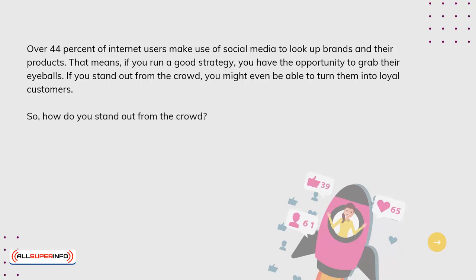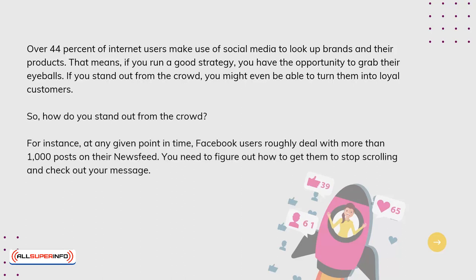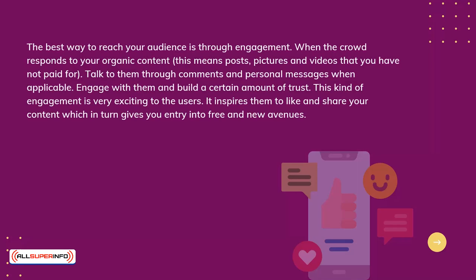So how do you stand out from the crowd? At any given point in time, Facebook users roughly deal with more than 1,000 posts on their news feed. You need to figure out how to get them to stop scrolling and check out your message. The best way to reach your audience is through engaging. When the crowd responds to your organic content — posts, pictures, and videos that you have not paid for — talk to them through comments and personal messages when applicable. Engage with them and build trust. This kind of engagement is very exciting to users: it inspires them to like and share your content, which in turn gives you entry into free and new avenues.